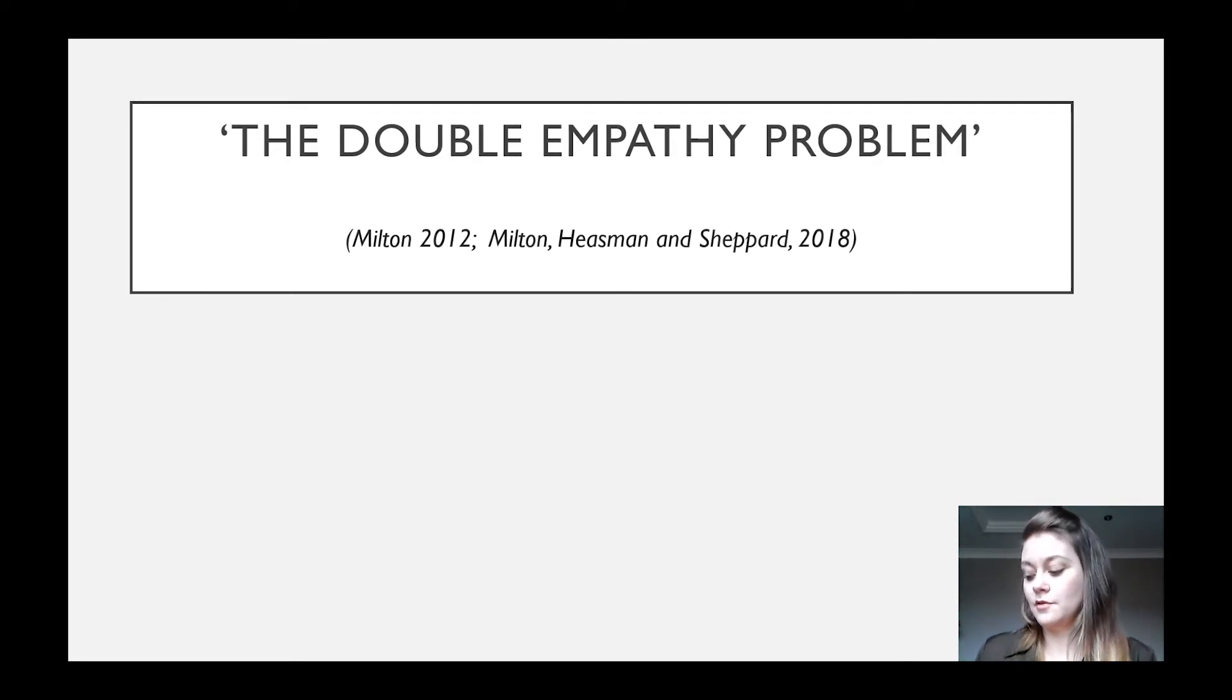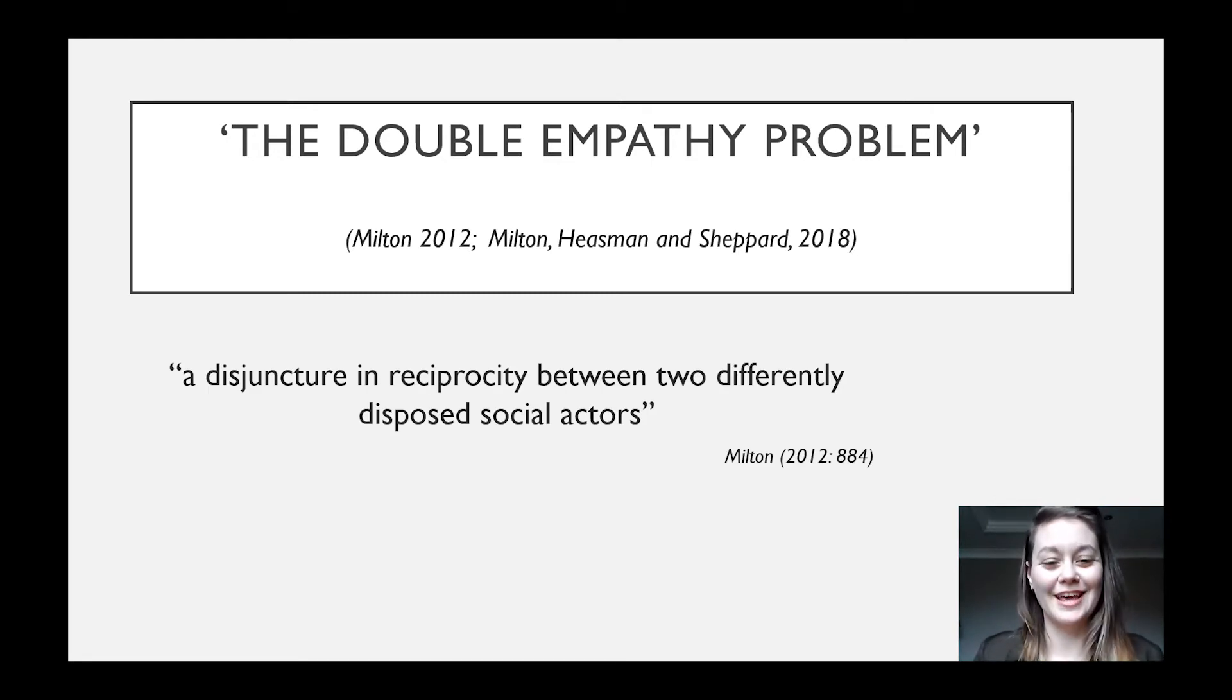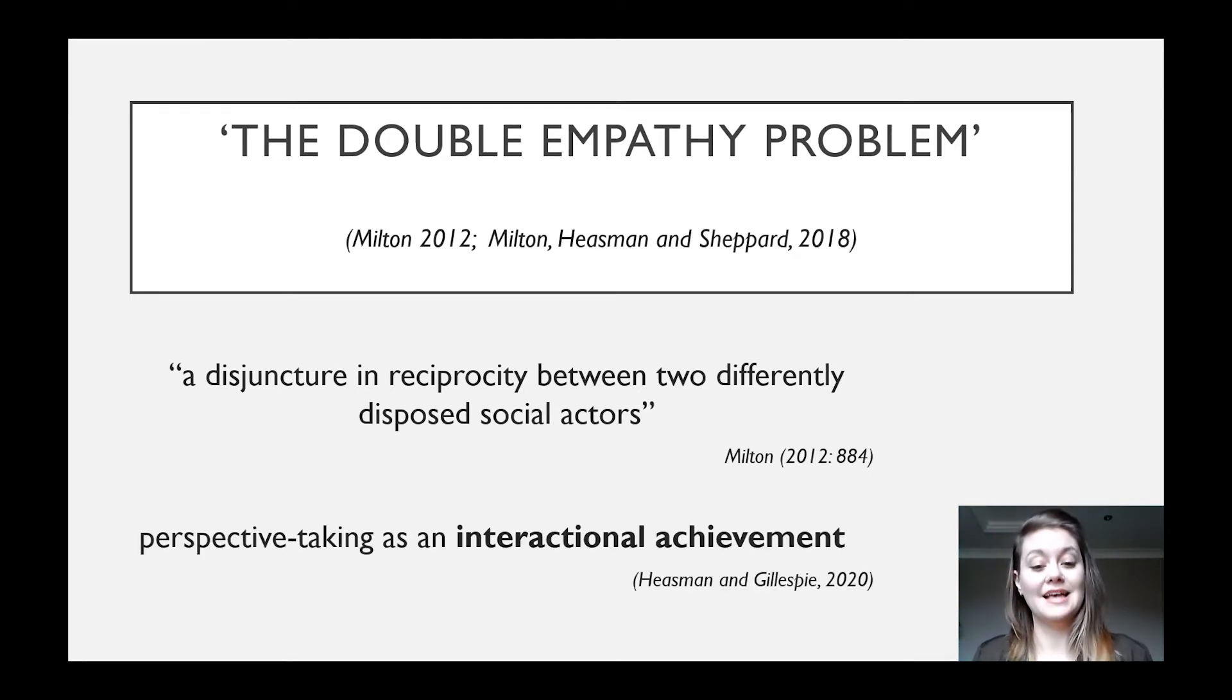These findings all support a theory that's been termed the double empathy problem. Based on his own experiences and anecdotal evidence from the autistic community, autistic scholar Damien Milton proposed this term as a disjuncture in reciprocity between two differently disposed social actors. According to this approach, misunderstanding is not just a consequence of an autistic impairment, it's a mutual problem. This accords with viewing perspective taking as an interactional achievement rather than a cognitive property of a single mind.